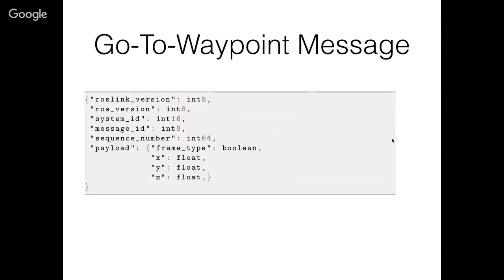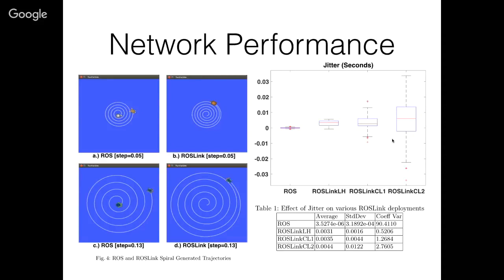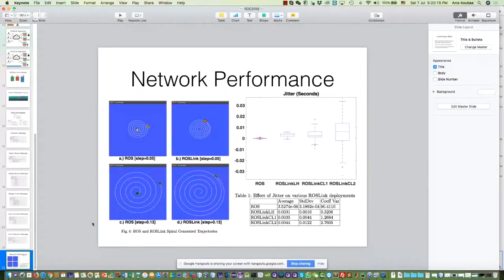There's similarly a go-to-waypoint message. Regarding network performance — since control is done through the network, conditions like available bandwidth and packet loss will impact performance. We made some analysis about network performance, and you can find details in the book chapter. As a summary, we performed closed-loop control of the TurtleSim — for example tracing a spiral shape — and you can see the spiral is slightly larger when done over the network, because network delays and jitter are added to the application.